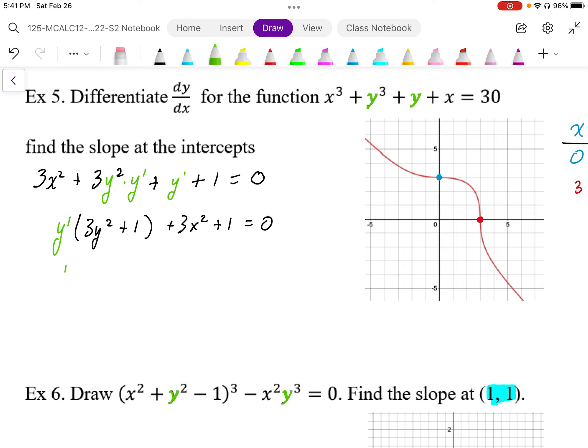Solving for y prime, so y prime as a function of x and y, that's going to be equal to negative 3x squared minus 1 all over 3y squared plus 1.